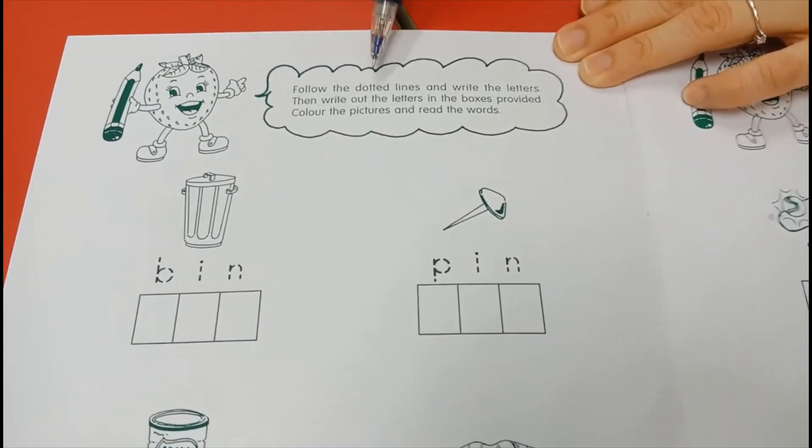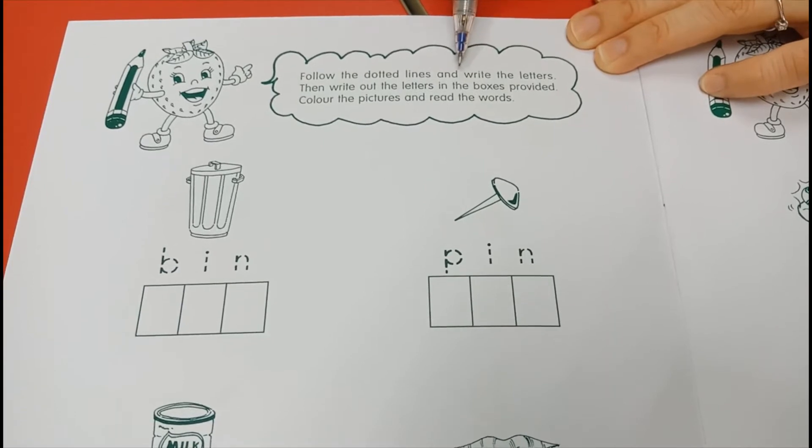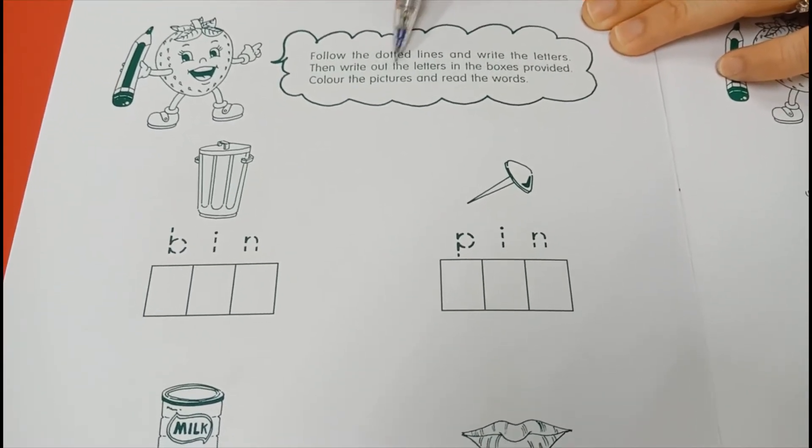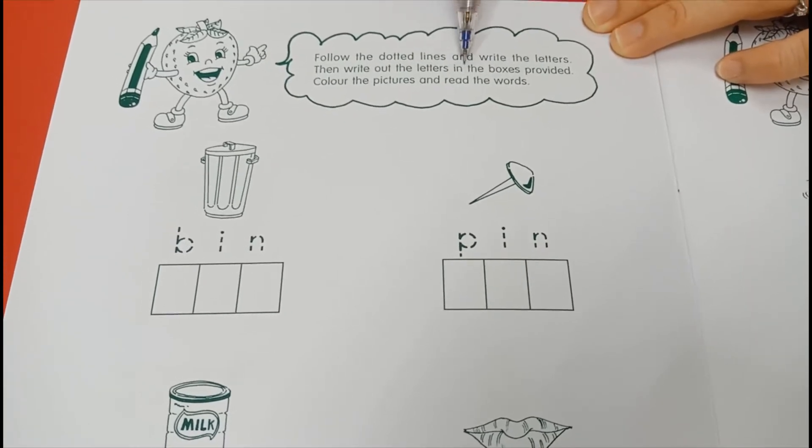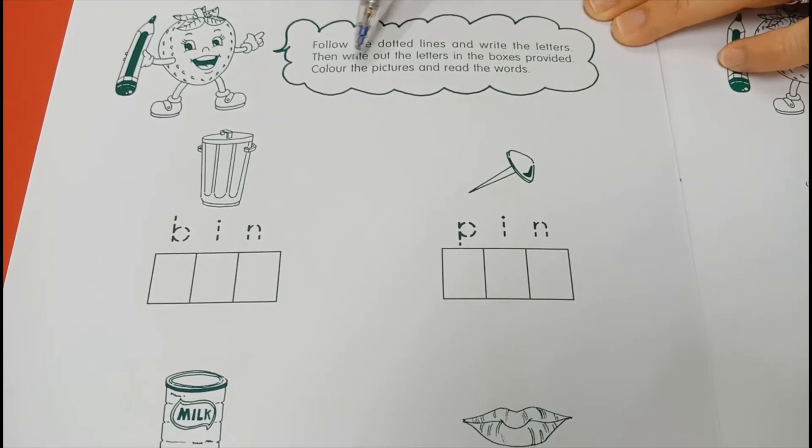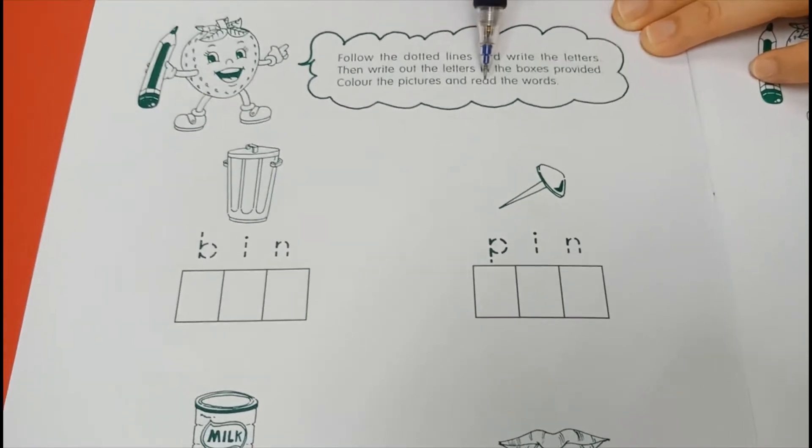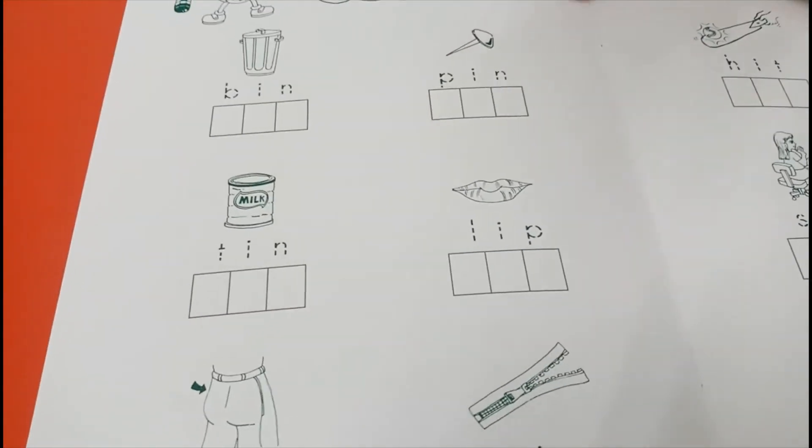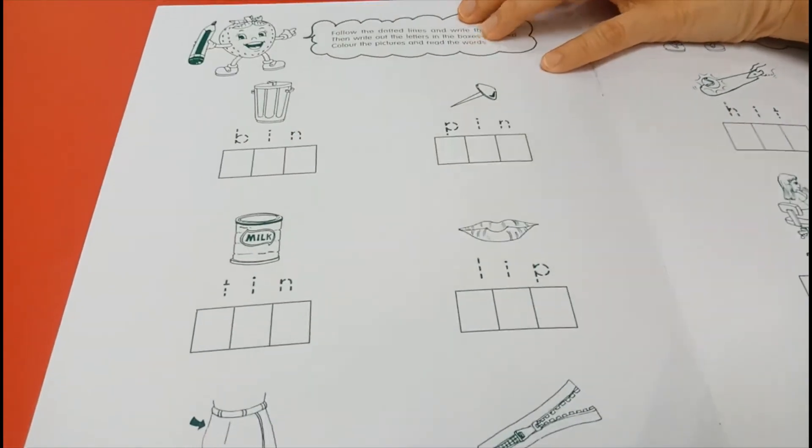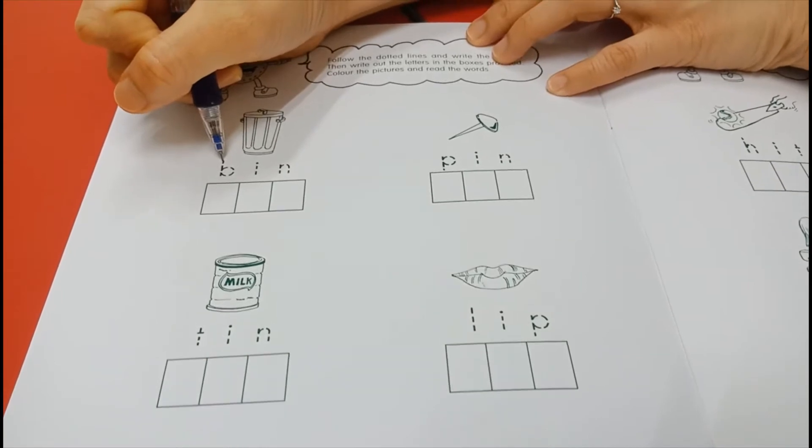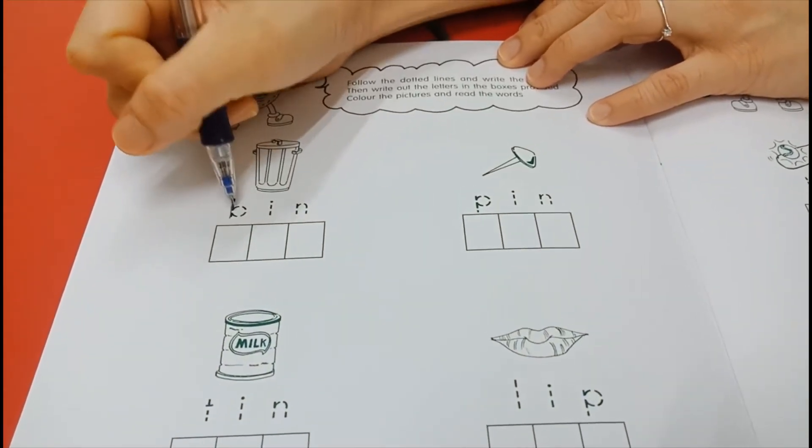Follow the dotted lines and write the letters. Then write out the letters in the boxes provided. Colour the pictures and read the words. Okay. So now, we just learned, right? IN and IP. So we are going to read out and we are going to write. How are you going to write? You take a pencil and you trace beautifully. So as you trace, you can read.